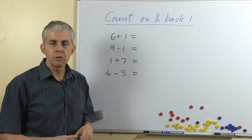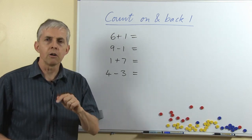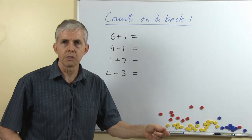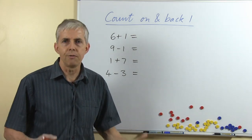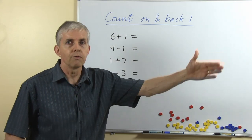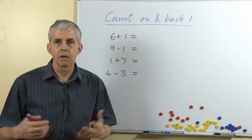What we want our students to do with this strategy, the count on and count back strategy, is to rely on their familiarity with the sequence of number names. So in other words, having counted since they were very young children from 1, 2, 3, 4, 5, using Sesame Street examples or other similar programs...